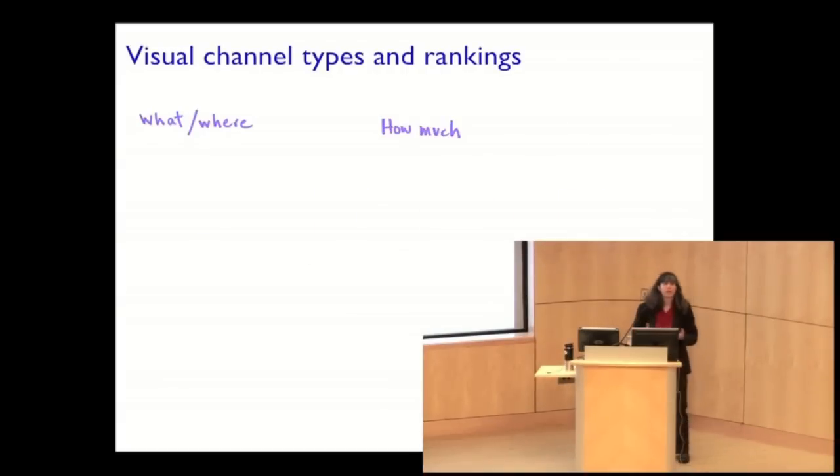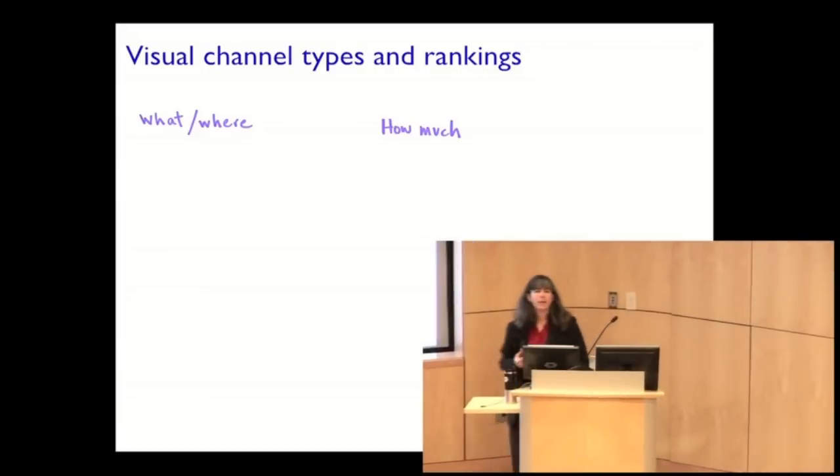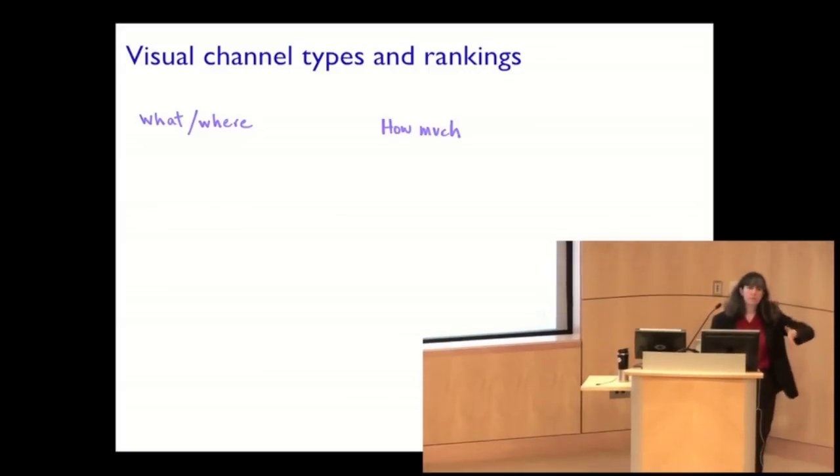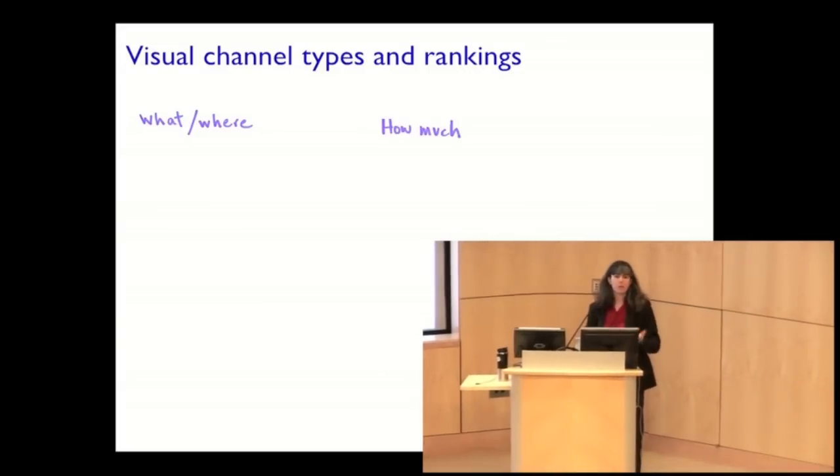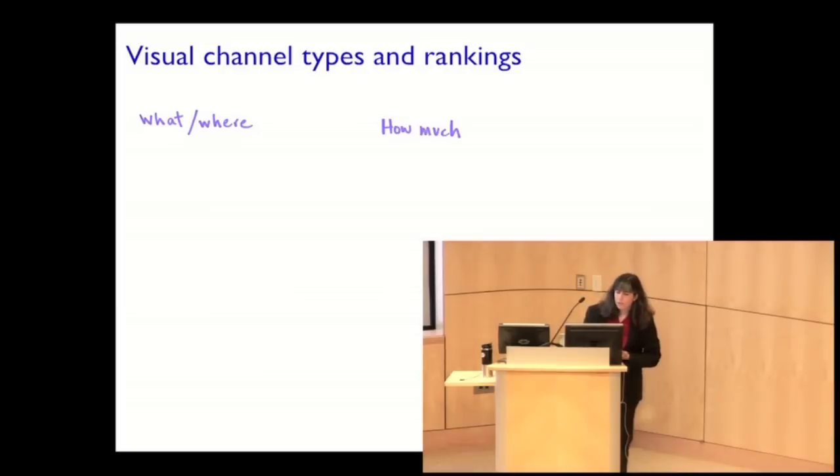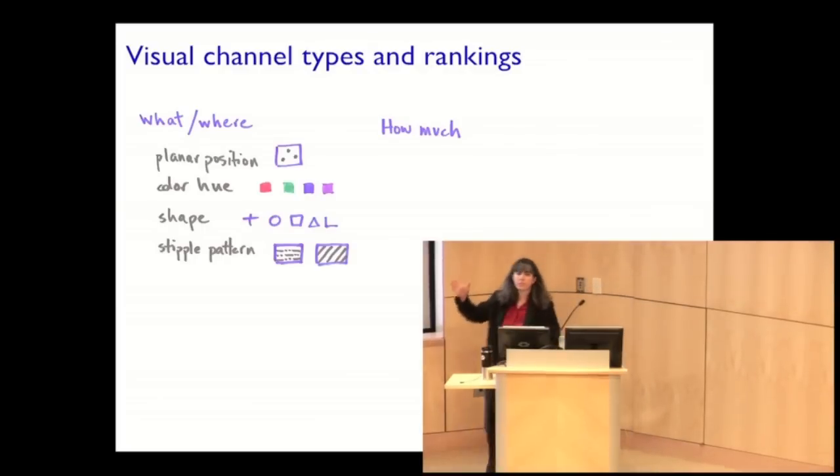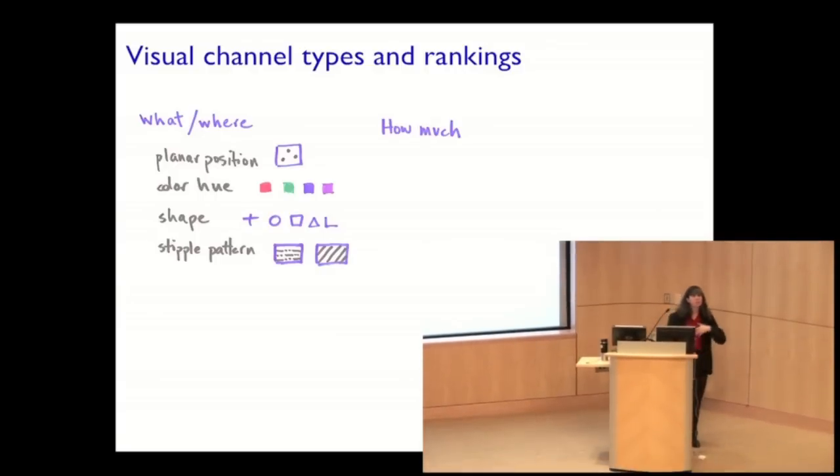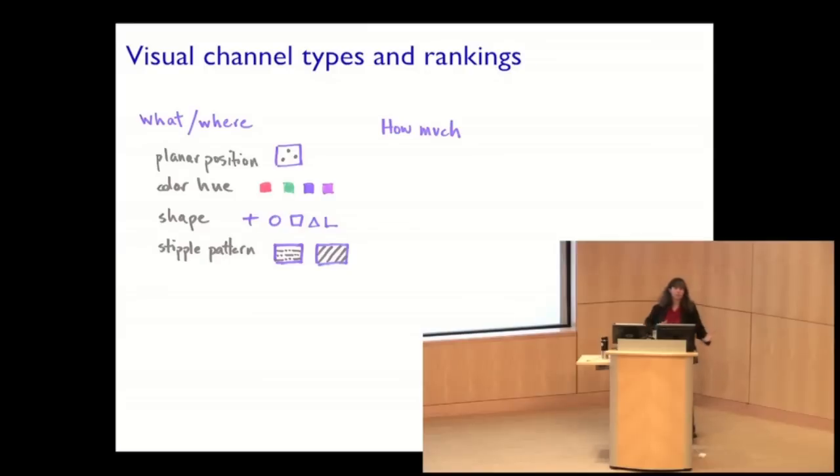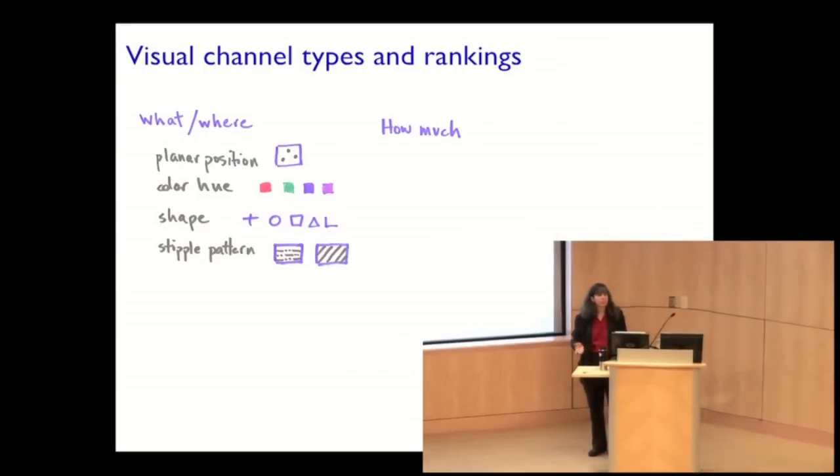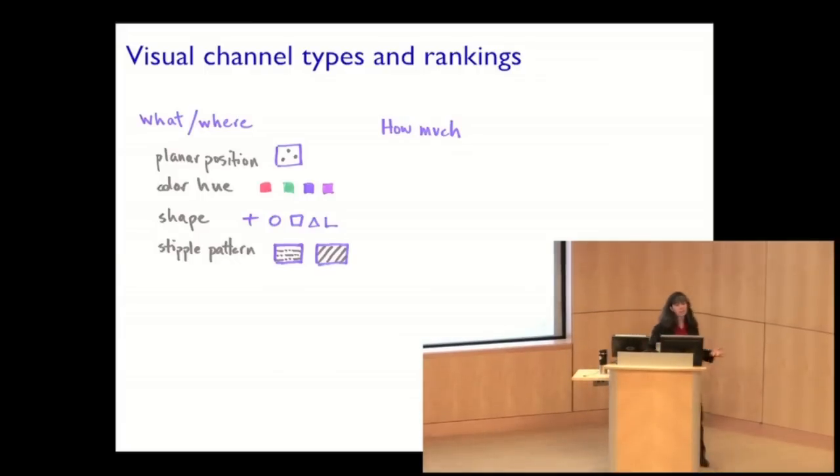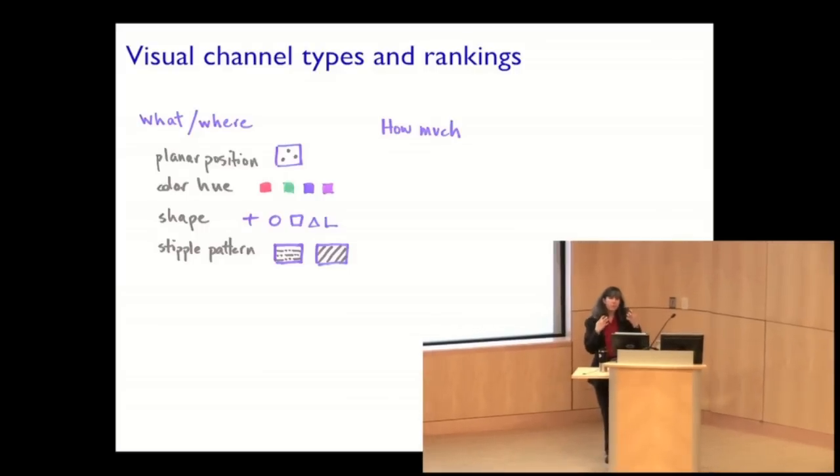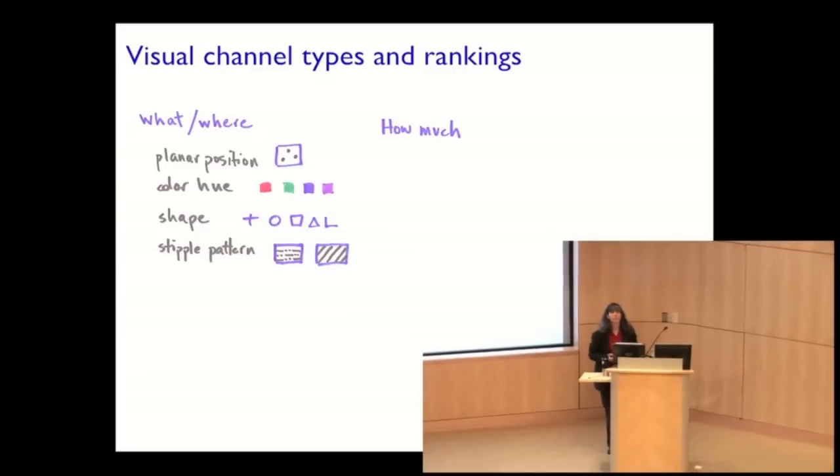So the fundamental breakdown with visual channels is what's the type? This is actually built into our perceptual systems. How do we interpret information we see with these channels? And one set of channels is what we can call the what or the where channels. So with these what where channels, these are things like well clearly planar position is not surprisingly going to be aware. That says where is something. And the rest of these channels like the hue for the color. So is it so you'd say what color is it? Is it red? Is it blue? Is it yellow? Is it purple? You can say what shape is that? A circle or a square? You can say what's the pattern? Is it a dashed line or a dotted line? More generally let's call that the stipple pattern if we think not just about lines but areas. So these are the visual channels that we intrinsically interpret as telling us what something is.